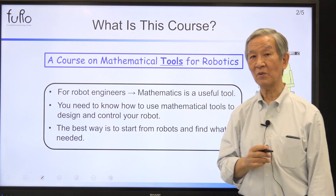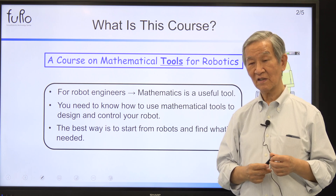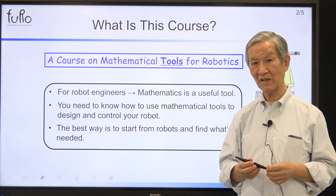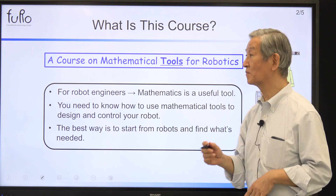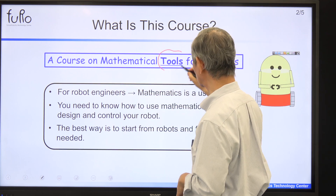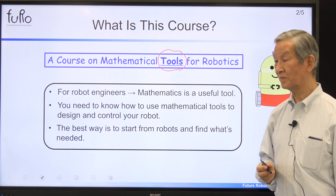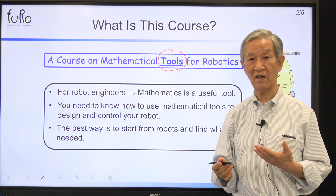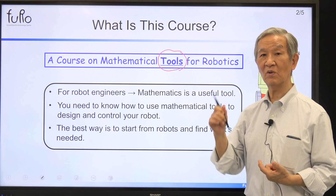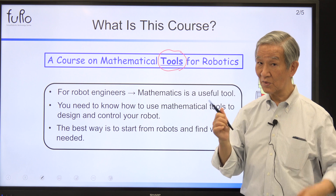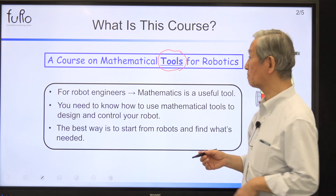Okay, what is this course? I will give you three questions. First one: what is this course? Since this is called Fundamental Mathematics for Robotics, you might think this is a mathematics course — which it is not. This is a course on mathematical tools. The important word here is 'tool for robotics.' Mathematics is a tool for us robotics engineers, and if we know how to use those tools well, we can do a lot of different good things with robotics.